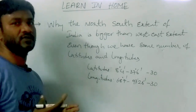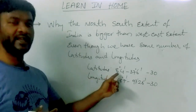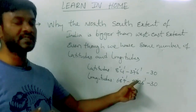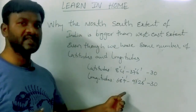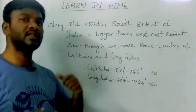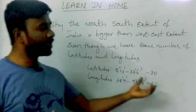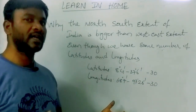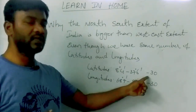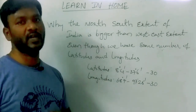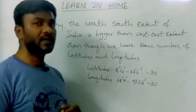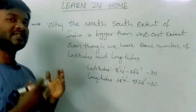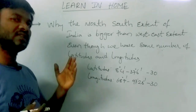In India, the latitudes range from 8°4' to 37°6' and longitudes from 68°7' to 97°25'. The total span gives us approximately 30 latitudes and 30 longitudes passing through India.